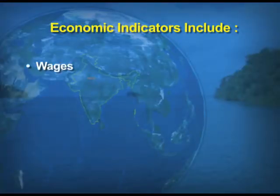Lastly, economic indicators include wages, income of the people, and employment. All three are interrelated — employment leads to income, and for daily-wage workers, wages are the primary source of livelihood rather than a fixed income. Today we have discussed human development, its definition, the HDI, and the different indicators across economic, social, and health spheres of life. Thank you.